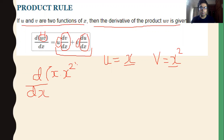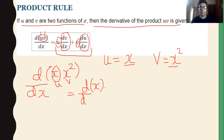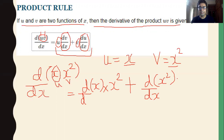If we differentiate this by applying the product rule, we differentiate u first. When I differentiate u first, I will multiply v as it is. Then I will differentiate v, and multiply u as it is. So d/dx of x, multiplied by x², plus d/dx of x², multiplied by x.